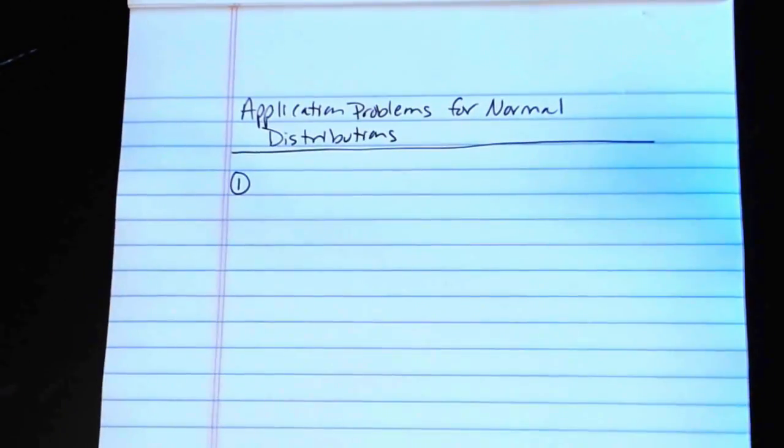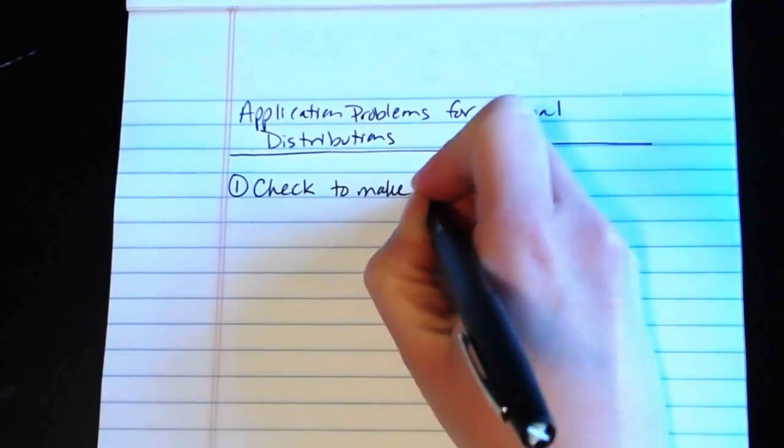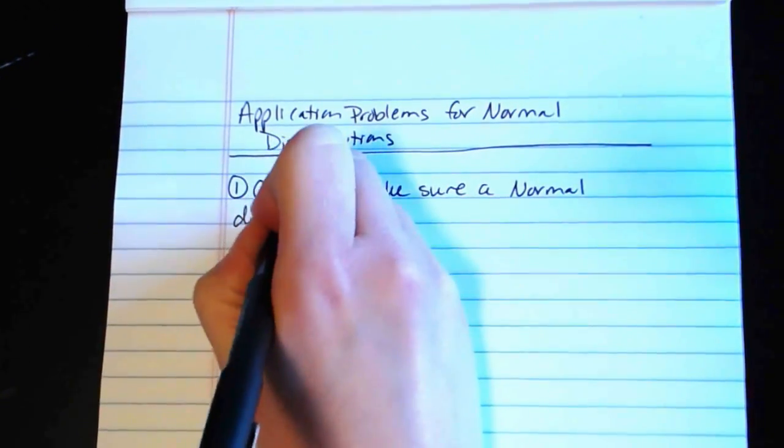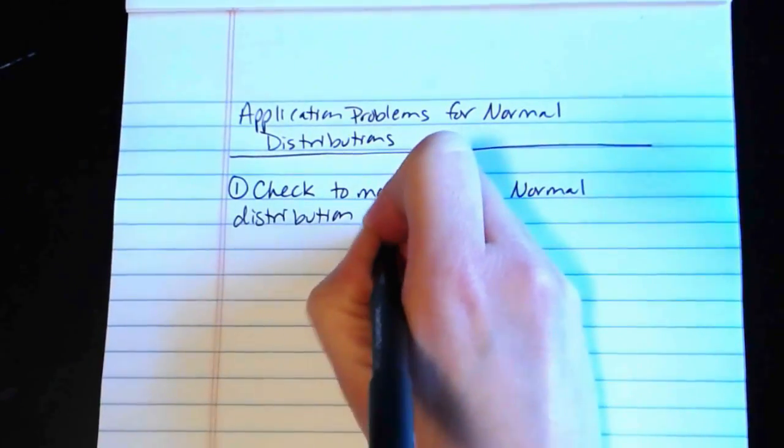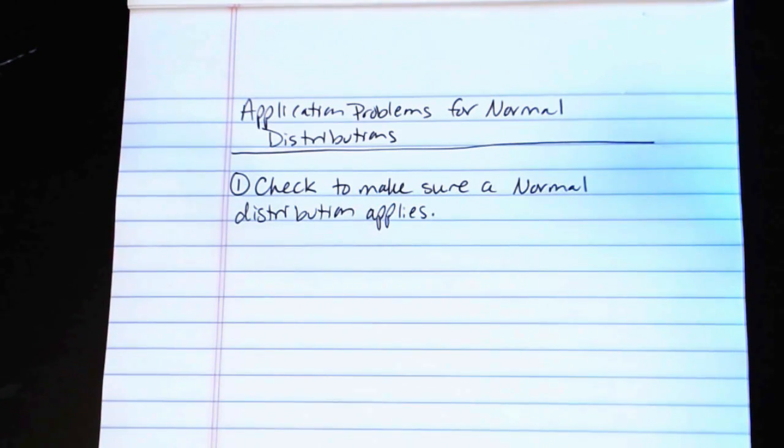The first thing that you want to do is you want to check to make sure a normal distribution applies to the scenario that you're working with. If nothing in the problem talks about the data being normally distributed, or mound shaped and symmetric, or bell shaped, or if you haven't followed the instructions in the book for checking to make sure that the data follow a normal distribution, then there's really no reason to believe that a normal distribution applies, and therefore you wouldn't necessarily be using these particular methods.